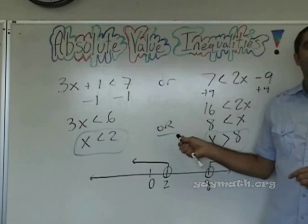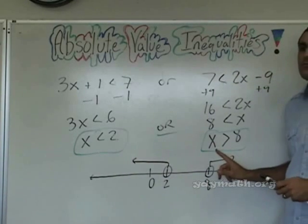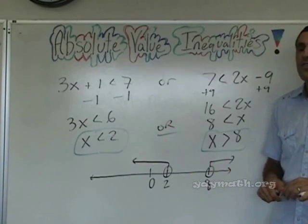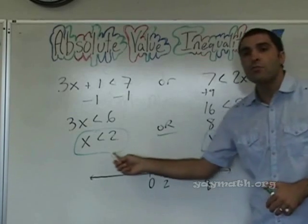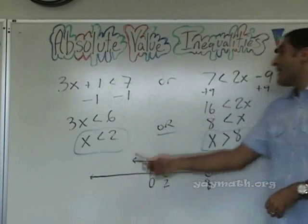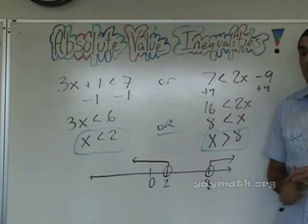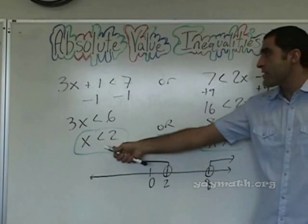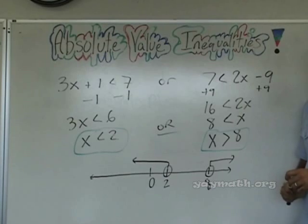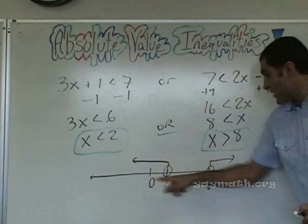Because the word 'or' implies how many of these need to be true? One — or both. Both is okay too. Can any number be true for both of these? Can a number be less than two and also greater than eight at the same time? No. Think about it — a number like zero makes the first one happy but not the second, but zero is still acceptable because it satisfies this one. So the answer is x less than 2 or x greater than 8.